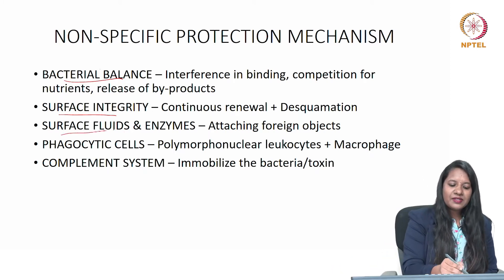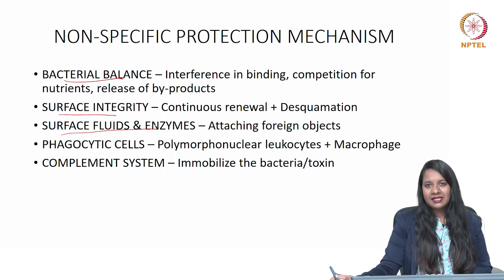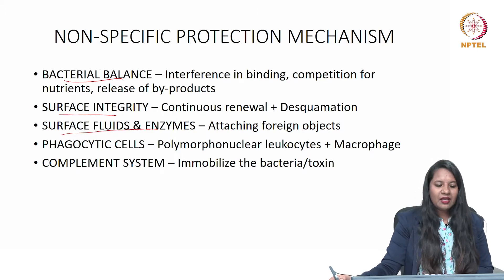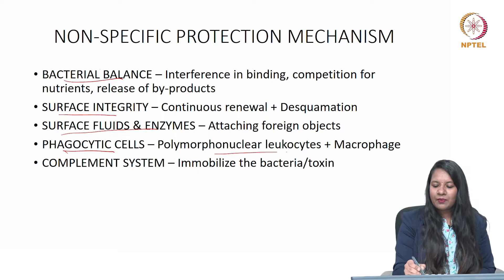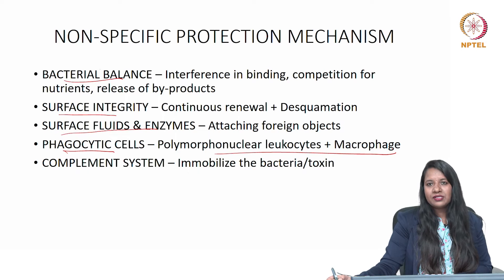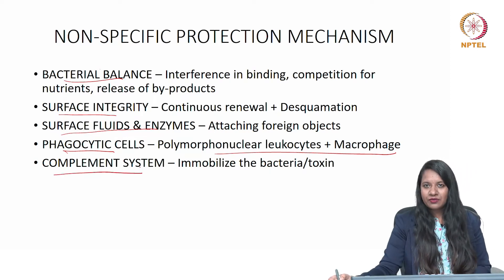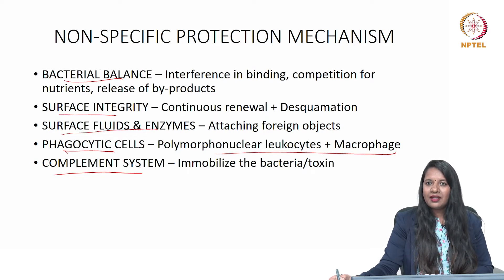Then comes surface fluids and enzymes — any vital tissue will have a fluid flowing over it. That fluid contains enzymes which can attach to foreign objects and eliminate them from the body. Then comes phagocytic cells, which are nothing but polymorphonuclear leukocytes and macrophages, which help in phagocytosis of foreign bodies and thus eliminate them. The complement system enhances phagocytosis by immobilizing the bacteria or toxin, making sure the entire foreign body has been eliminated.